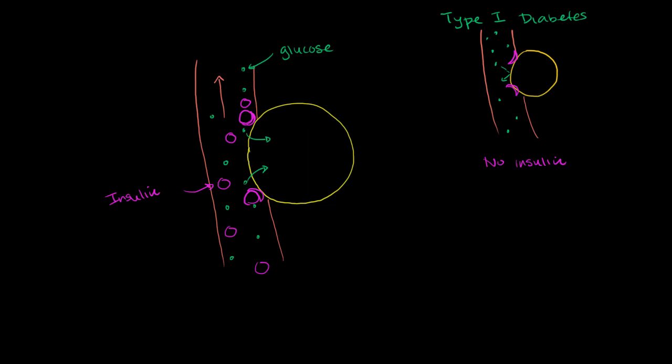The other scenario that you could imagine happening. Let me draw the cell again. So there's my cell. And let me draw the blood flowing past the cell. And once again, this is just one of trillions of cells in the human body. We have an estimated 10 to 100 trillion cells. So this is a very simple diagram that hopefully gets the point across.